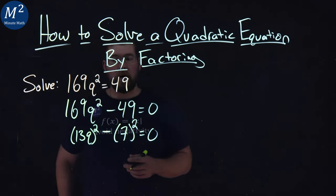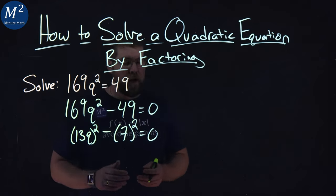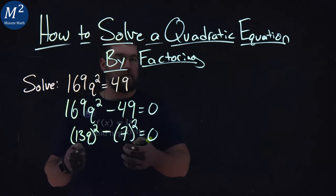So I have 13q all squared, that gives me 169q². 7² is 49, and now I have my difference of squares here.